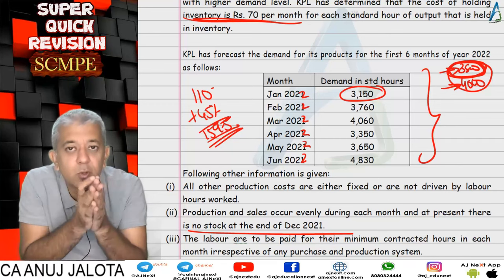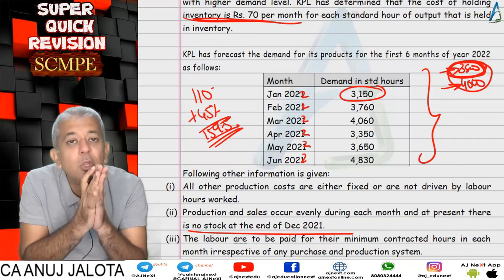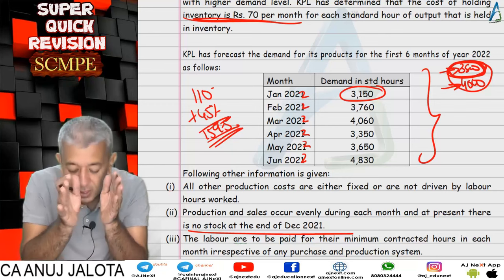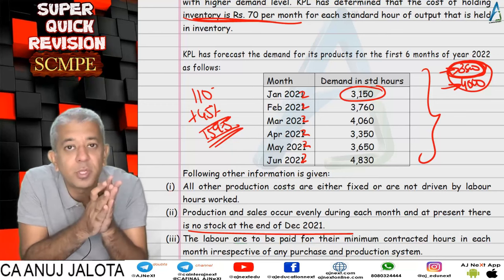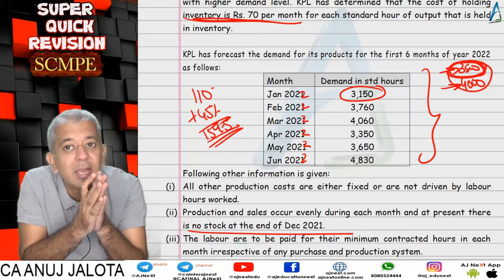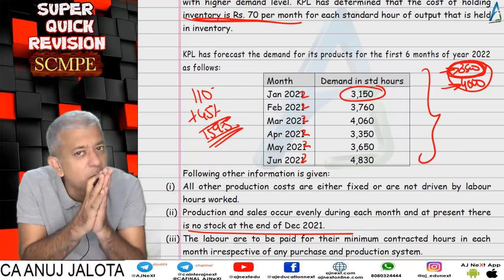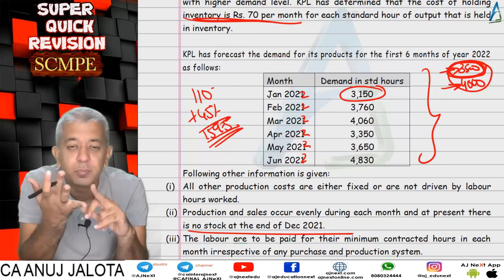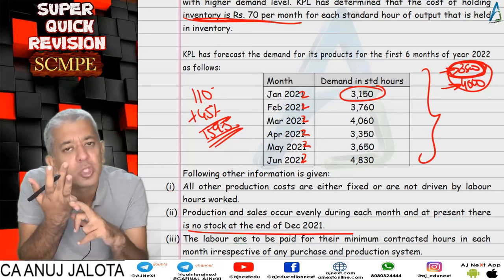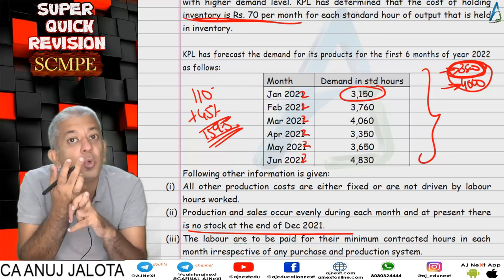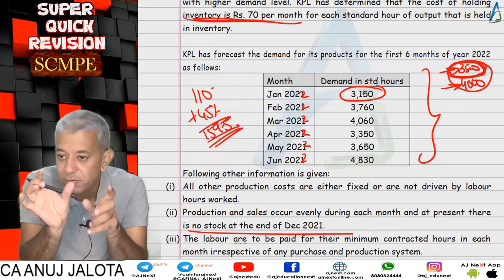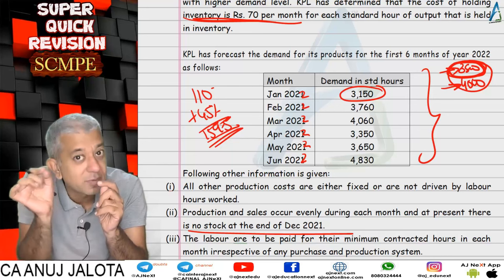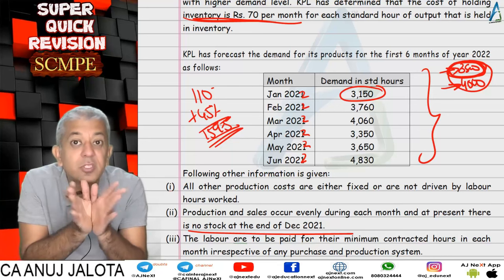When solving this question, you will realize that in no particular month does demand exceed 3,800 standard hours under the push system — so there is no overtime. Under the push system there will be large carrying costs but zero overtime cost. Total cost under push = total carrying costs + zero overtime.